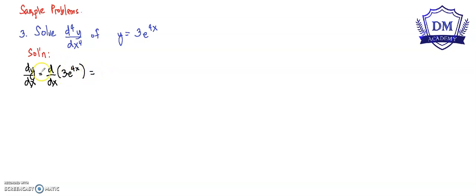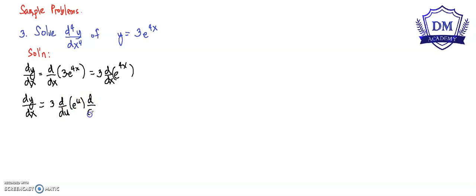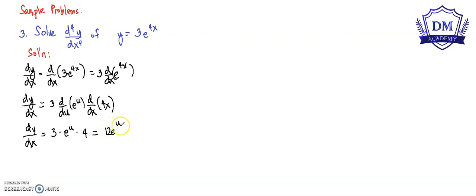This is equal to — let us factor out first the constant, that is 3, d over dx of e raised to 4x. Using chain rule, that is d over du of e raised to u, multiplied by the d over dx of 4x. This is equal to 3, multiplied by the derivative of e raised to u, which is still e raised to u. Therefore, the first differentiation dy over dx is equal to 12e raised to 4x.